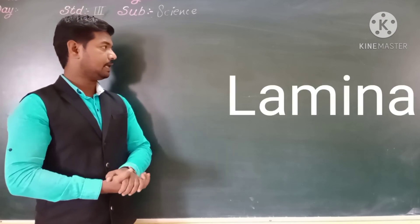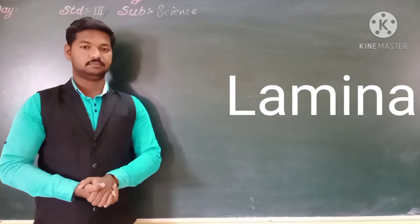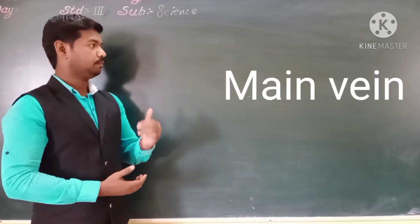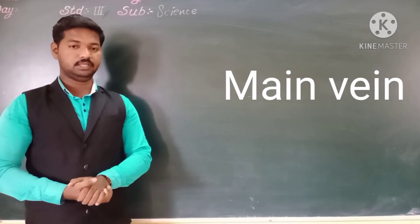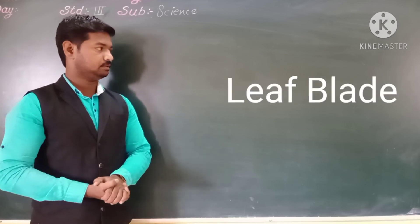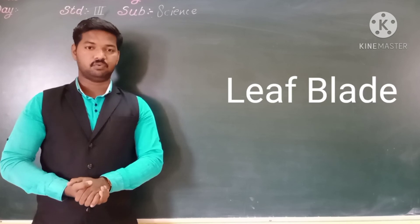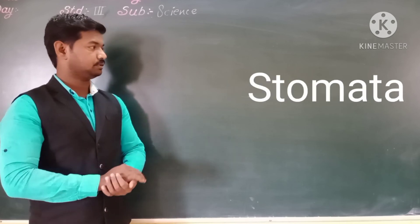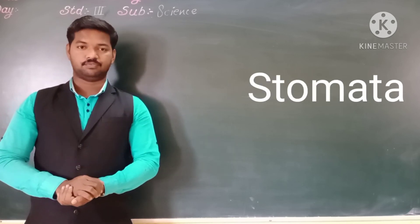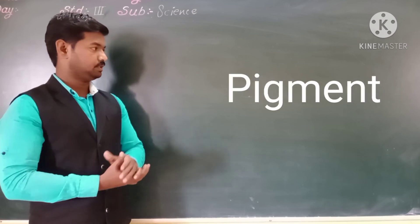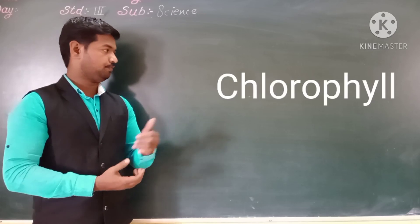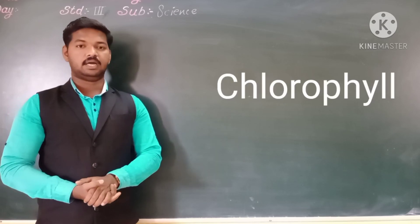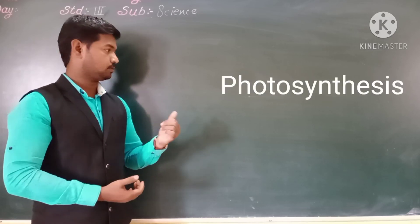Number one, lamina. Number two, main vein. Number three, leaf plate. Number four, stomata. Number five, pigment. Number six, chlorophyll. And number seven, photosynthesis.